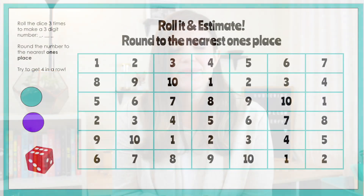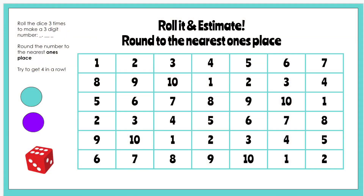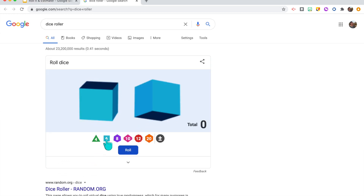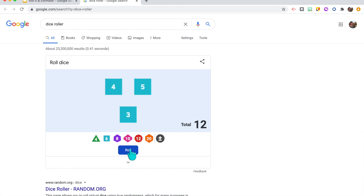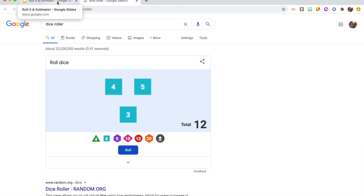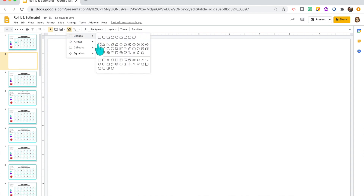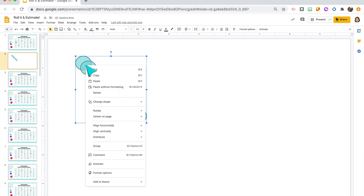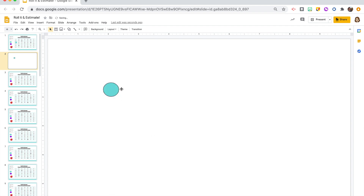With Google Slides, I created the game board by inserting a table, adding the numbers, and putting directions on the side. For this game, students needed to roll three dice. Google actually has a free dice tool, so I linked that into the Google Slides game board — students click it and it opens in a new tab. That dice tool has many different types of dice and you can even roll three at once. I also created little game pieces using the shape tool: click the circle shape, change the color for two players, copy and paste as many as you want, align them so they're stacked, and students click and drag onto the game board.